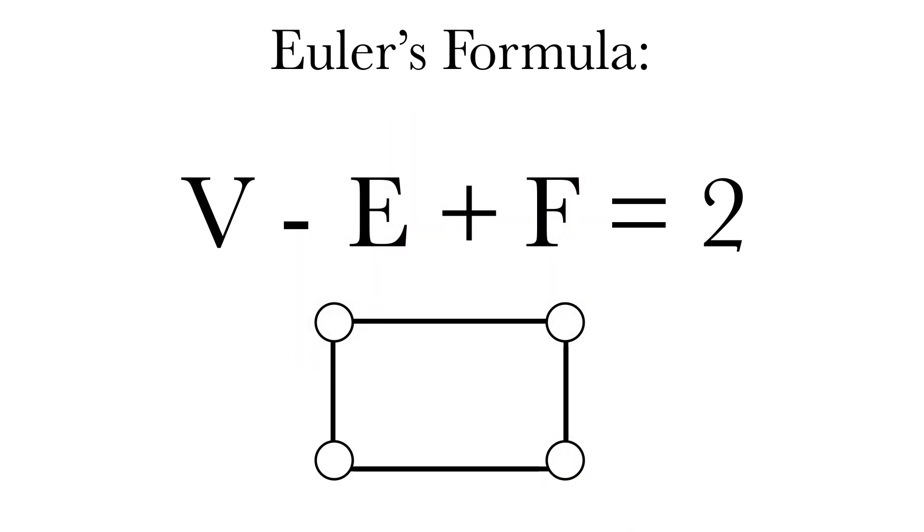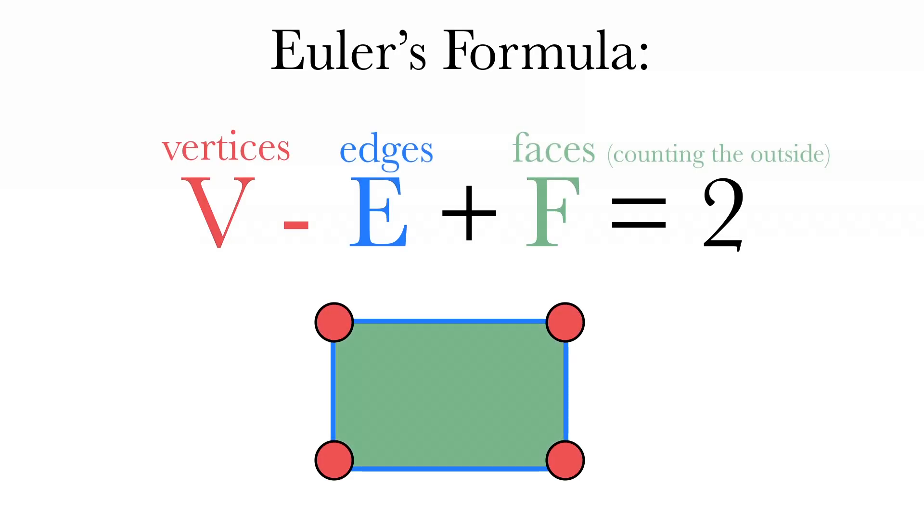Consider Euler's identity, which states that every planar map is bound by the equation V - E + F = 2, where V is the number of vertices, E is the number of edges, and F is the number of faces, counting the outside of the graph as a face.